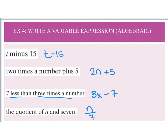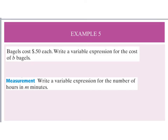Example five is a story problem. It says bagels cost 50 cents each, and we need to write a variable expression for the cost of b bagels. Anytime you're dealing with cost, you multiply the price of an individual item by the number of items purchased, so the expression is 0.50 times b, or simply 0.5b.